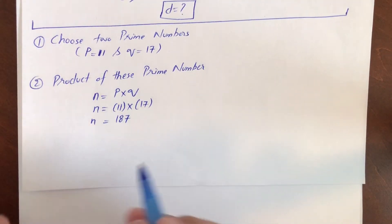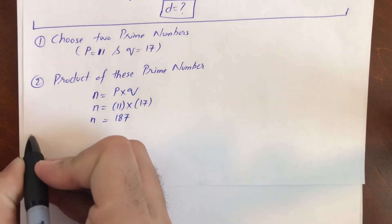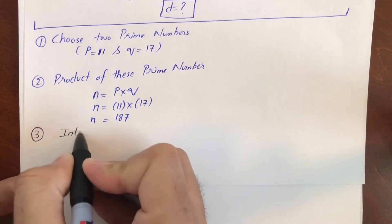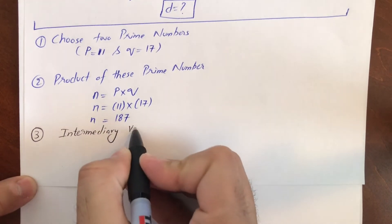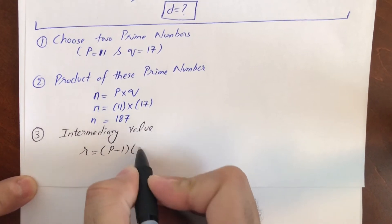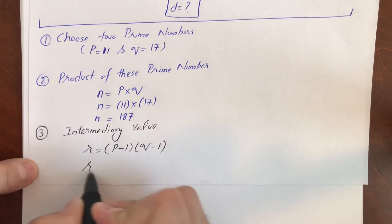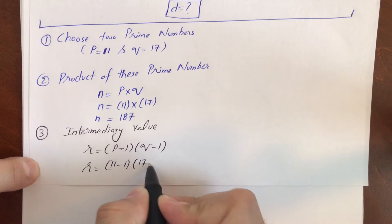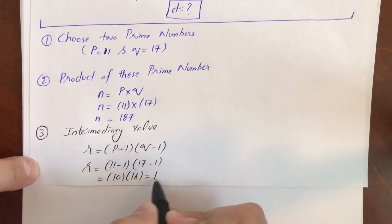Now let's move to the third step. We need to find the intermediary value, which equals (P-1) × (Q-1). So R = (11-1) × (17-1) = 10 × 16 = 160.